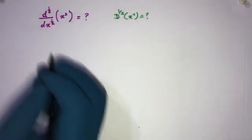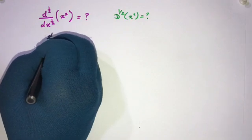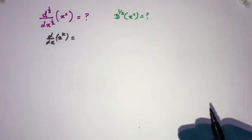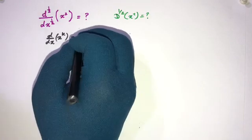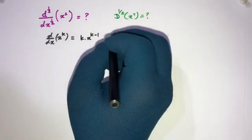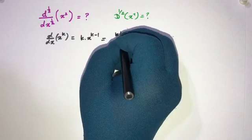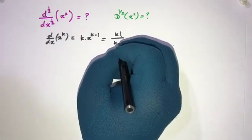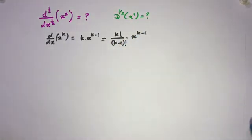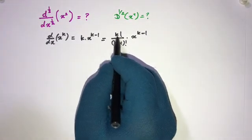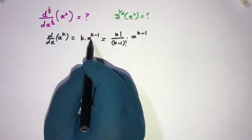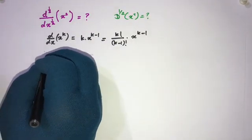First, I am going to take d/dx of x to the k power. We know the general power rule of differentiation: k times x to the k minus 1. We can write this as k factorial over (k minus 1) factorial times x to the k minus 1. Since k factorial equals k times (k minus 1) factorial, the (k minus 1) factorial cancels, giving k times x to the k minus 1.